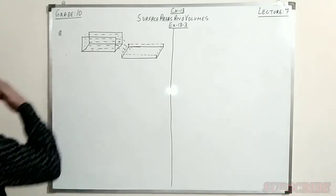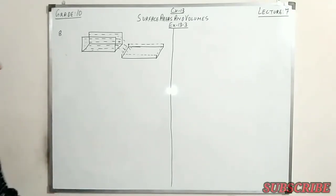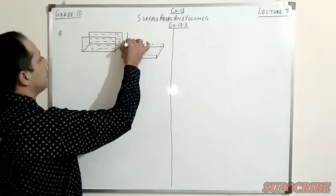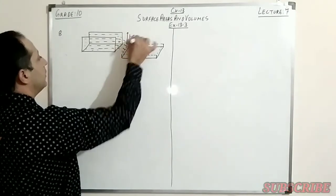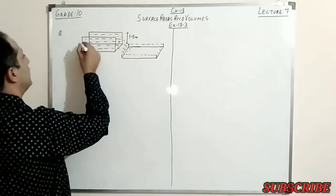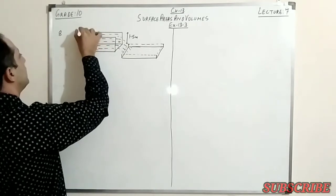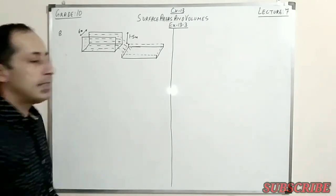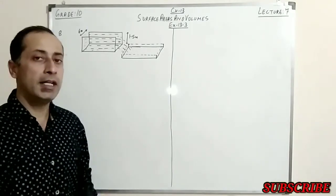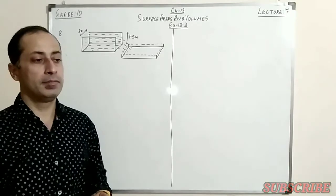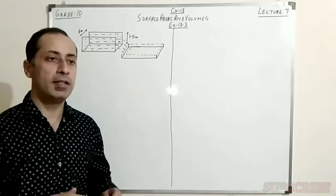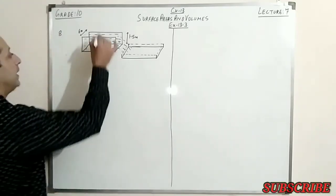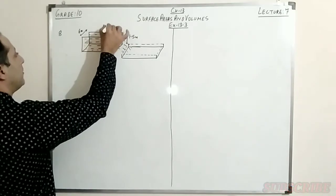I have drawn a cross-section of the canal. The canal is 1.5 meters deep and 6 meters wide. The water from this canal is used to irrigate a field, and the standing water required in the field should be a height of 8 centimeters. The speed of the water moving is 10 kilometers per hour.